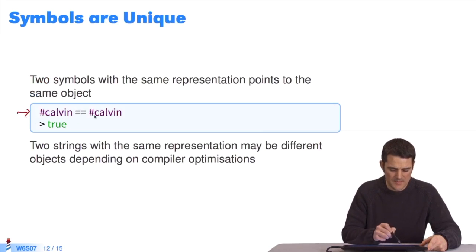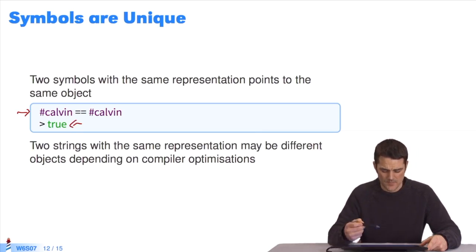Here we have hashtag calvin equals equals hashtag calvin and it sends back true. It's the same object. This is not the case for strings. For strings, it depends. It depends on the compiler's optimizations. So this is the real difference between symbols and strings.